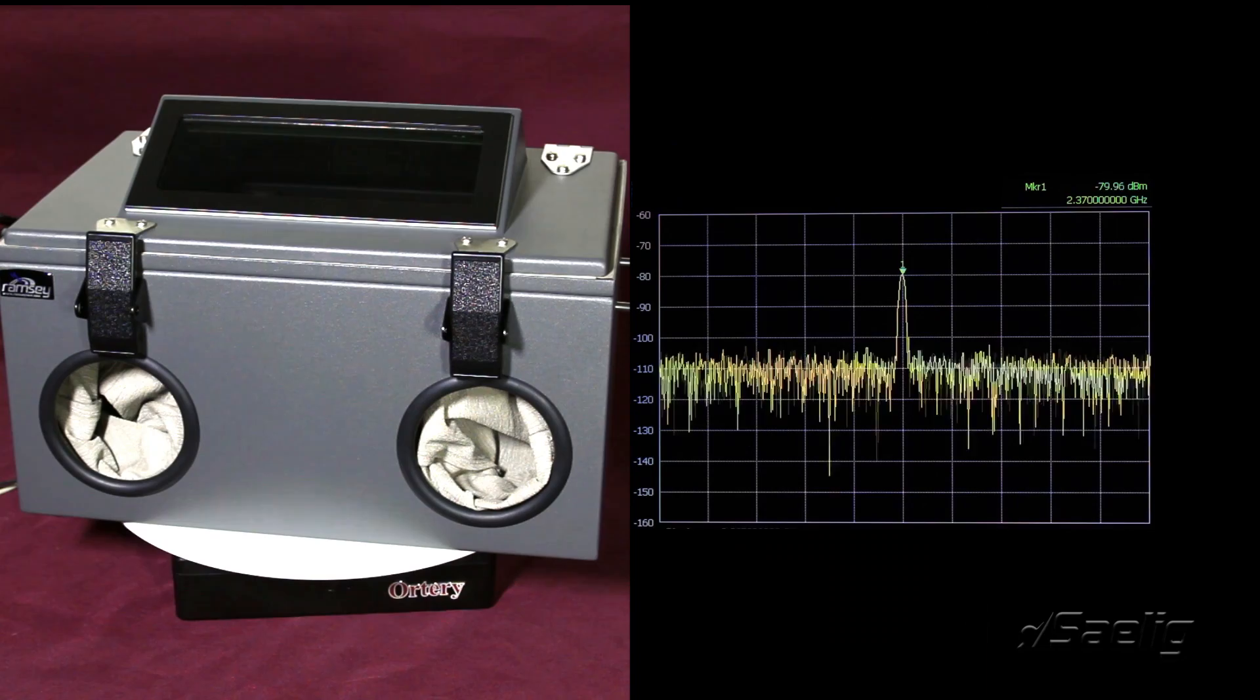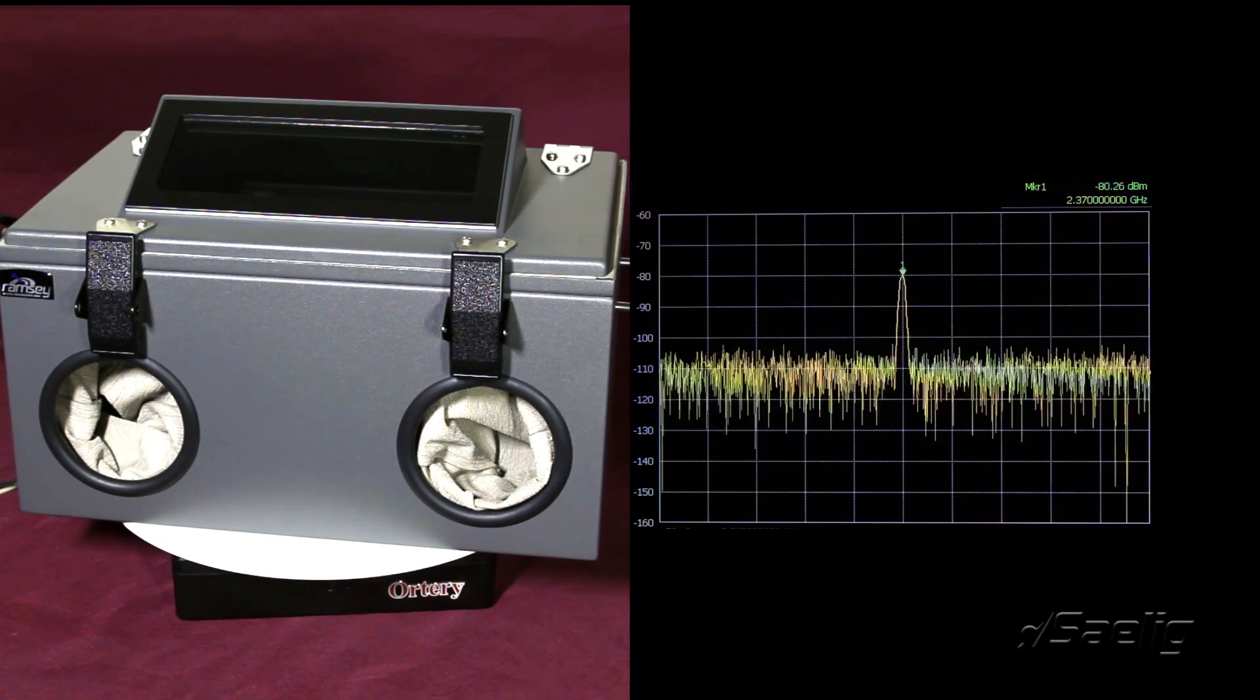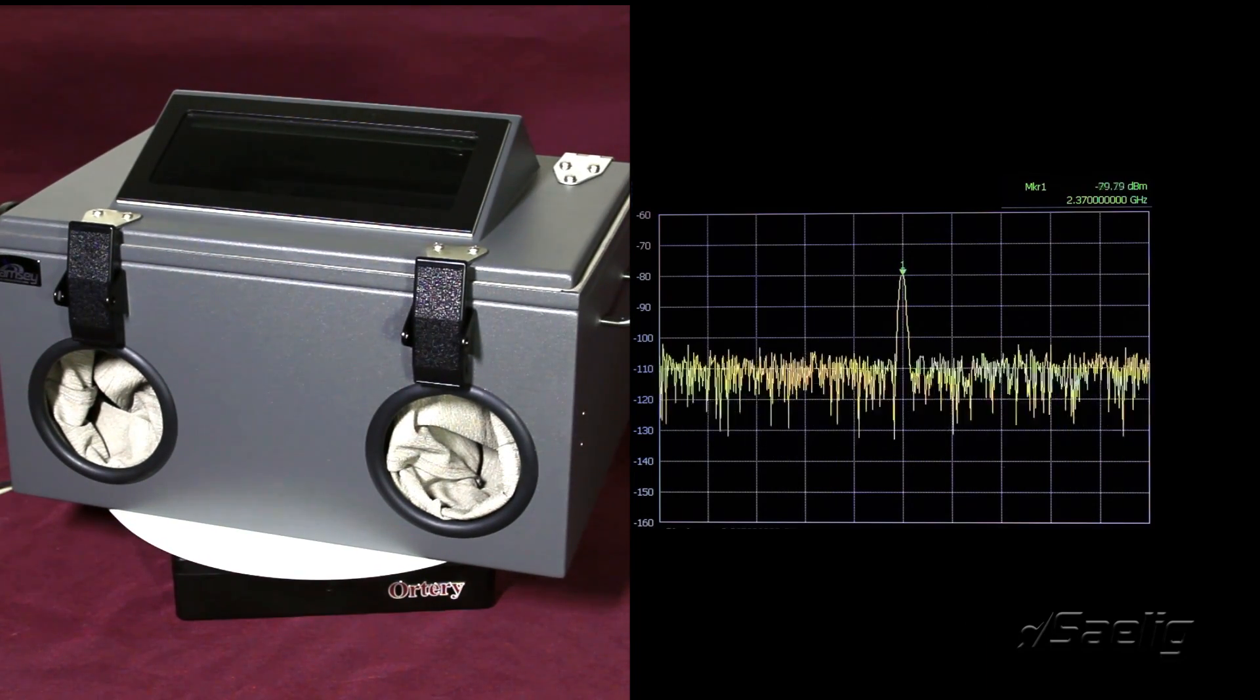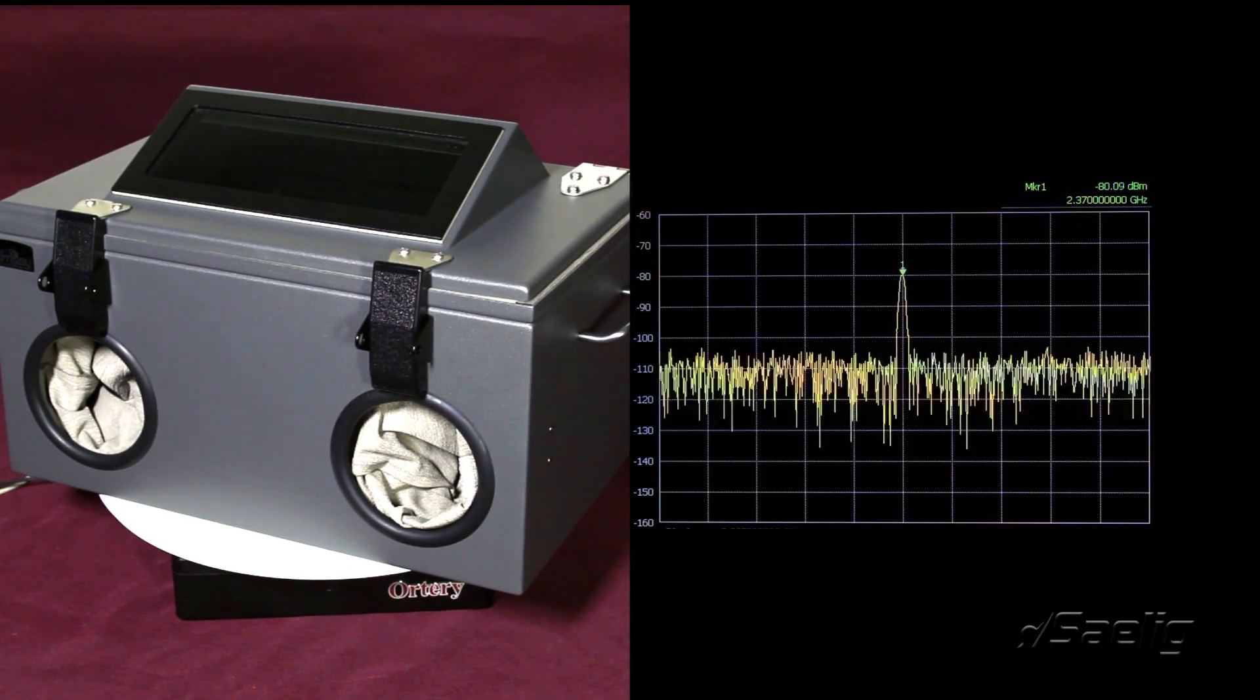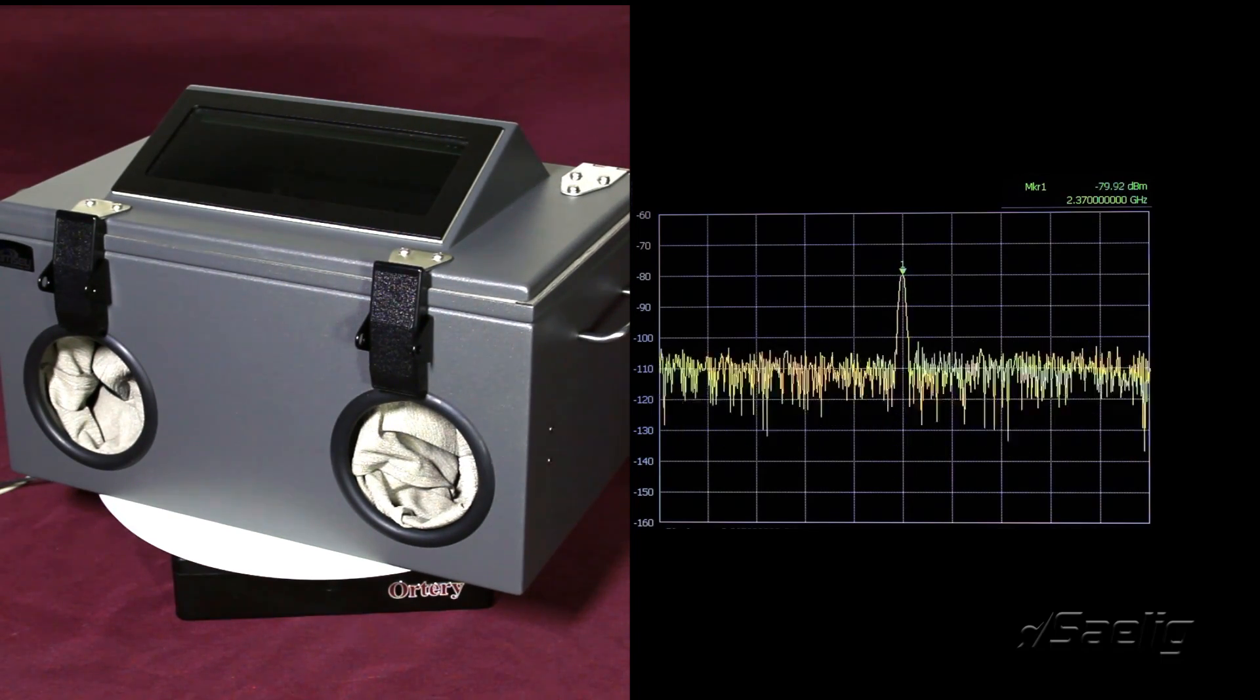Now you can see we have the Ramsey enclosure on the turntable doing the same 9 degree steps and we're measuring how much of that RF we can see coming through the box.